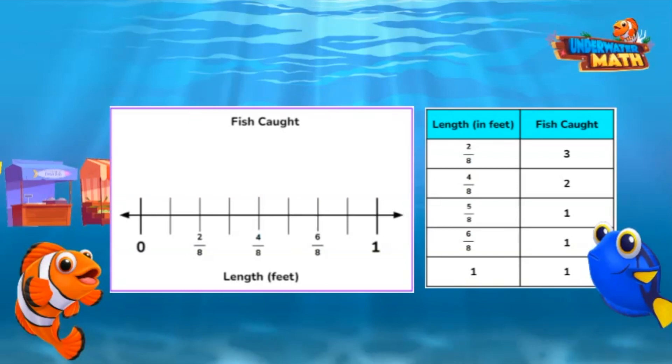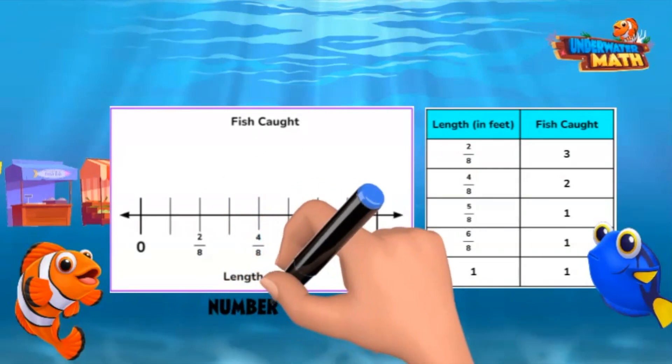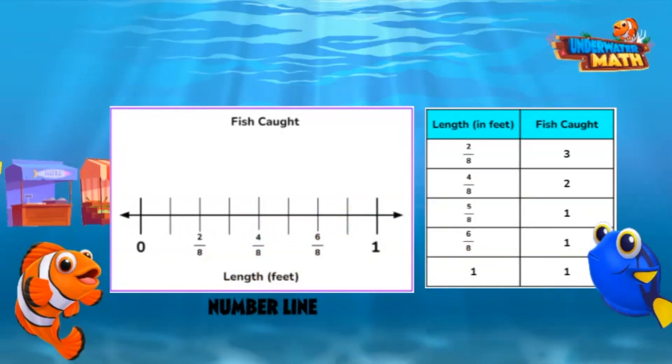If Sailor Tom measured each fish he caught to the nearest one-eighth of a foot, let's divide our number line into eight parts to match. The number line will tell us the length of each fish he caught. The amount of fish that measured each different length is called the frequency, the values that go above the number line. A number line may also have a key with an icon or an X above it. For today, each fish icon represents one fish.